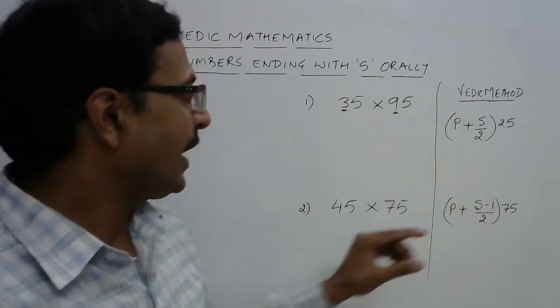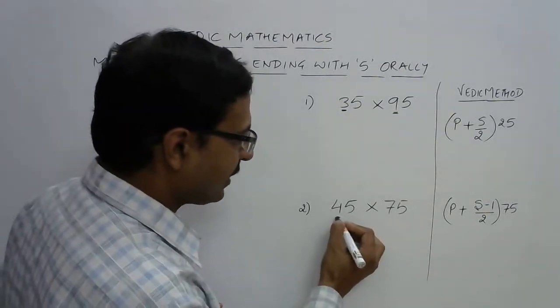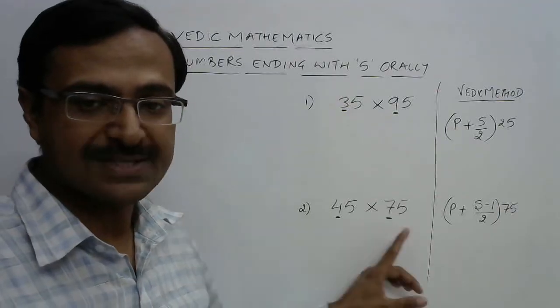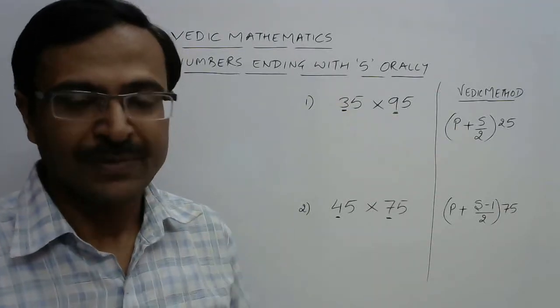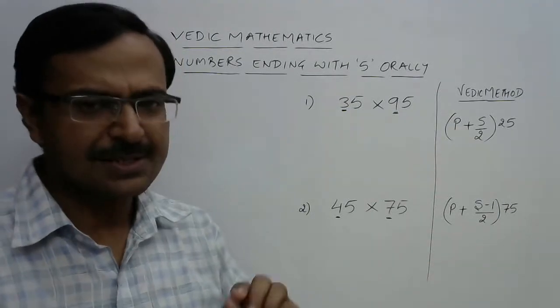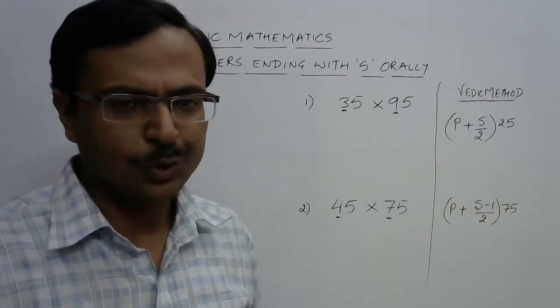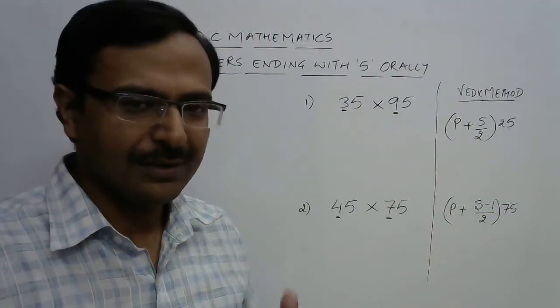And if you leave out 5s here and add the remaining digits and it comes out to be odd, like here we have 4 + 7 = 11, which is odd, then the method changes very, very slightly. I've written the method here, but you don't need to write the method. You can see the numbers and tell the answer very, very easily.